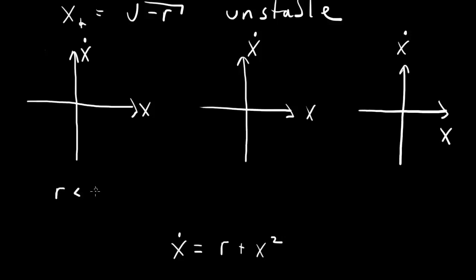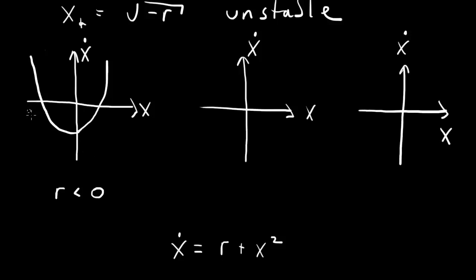First, let's see what happens when r is negative. We have two fixed points, meaning x-dot is 0 at two values. It equals r when x equals 0, and the curve is symmetric about x equals 0, so the graph looks like a upward-opening quadratic shifted down. When x is in the middle region between the two fixed points, x-dot is negative, so x is decreasing — we move in that direction. Out on either side, x-dot is positive, so x is increasing.